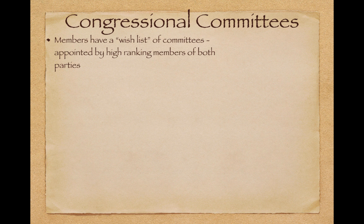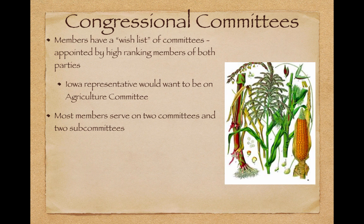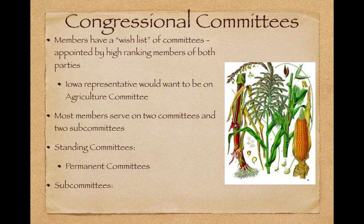Congressional committees: members have a wish list of committees they want to be on, and they are appointed by high-ranking members of both parties. An Iowa representative, for example, would want to be on the Agricultural Committee because there's a lot of corn grown in Iowa. Most members serve on two committees and two subcommittees. Standing committees are permanent committees, and subcommittees are where members report to larger committees on specific issues.